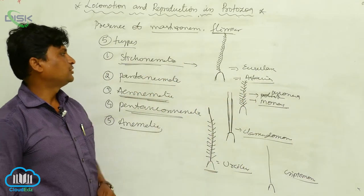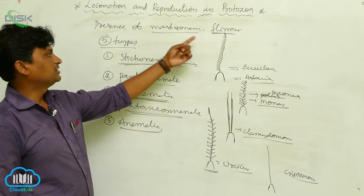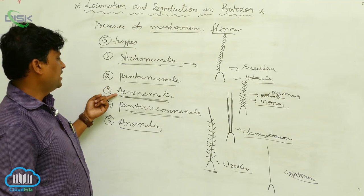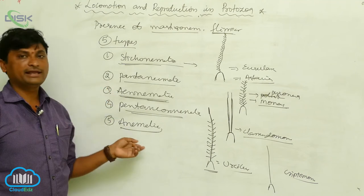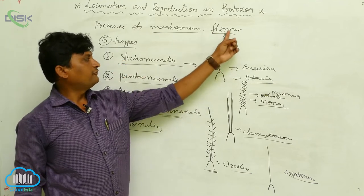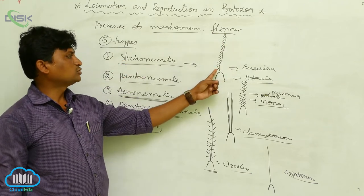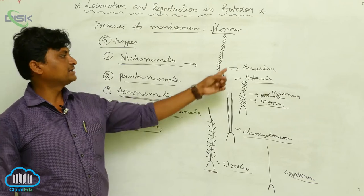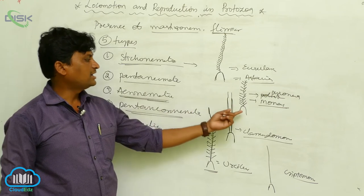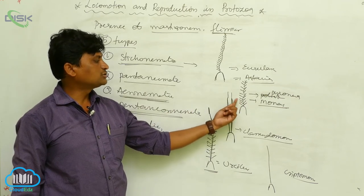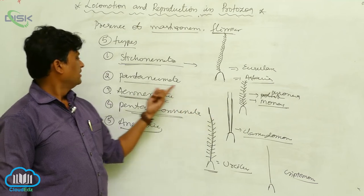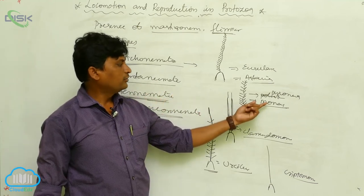To summarize the five types of flagella based on the presence of mastogonyms and flimmers: stichonimatic means flimmers and mastogonyms are oriented to one side only — example is Euglena and Astacia. Pantanimatic has mastogonyms on either side of the blepharoplast — example is Pyronema and Monos.